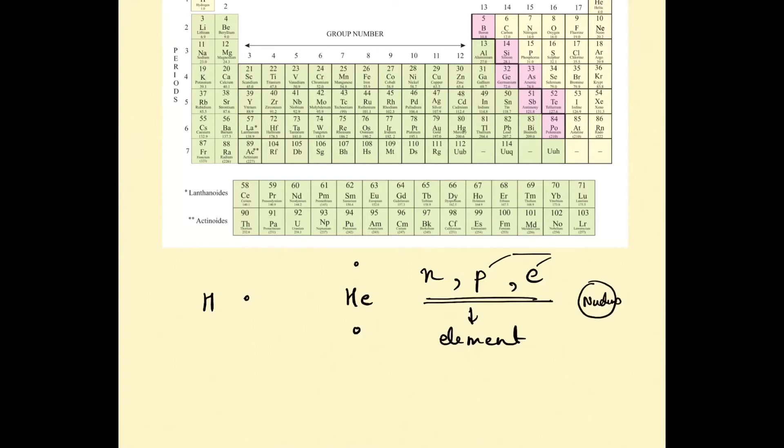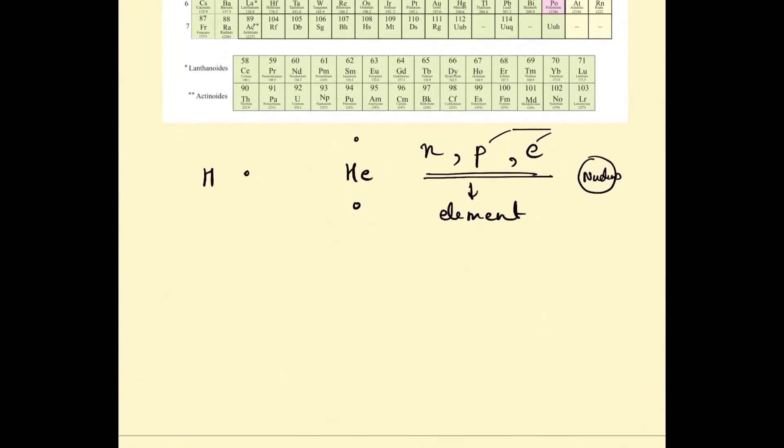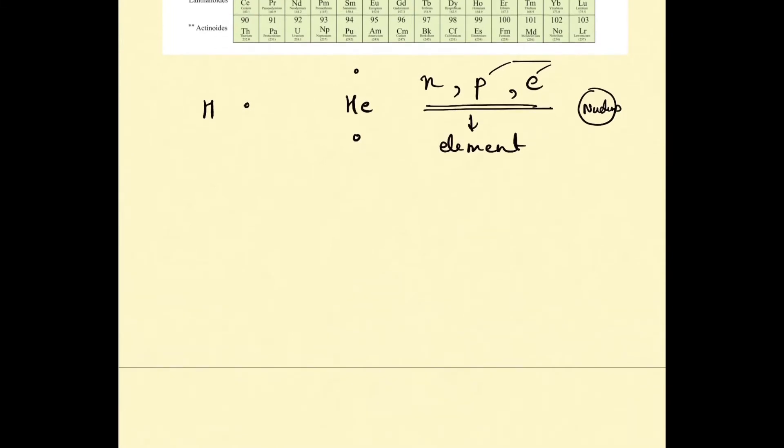Valency is really important when we study bond formation. I'll be talking about ionic bonds and covalent bonds in future videos. Atoms which are unstable are in a constant struggle to attain stability.